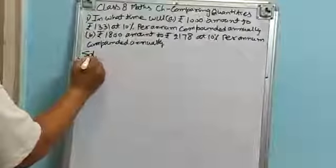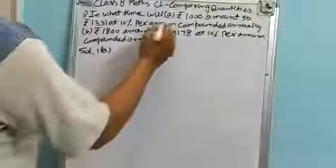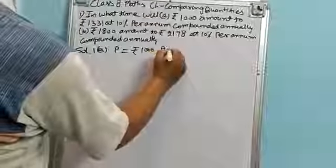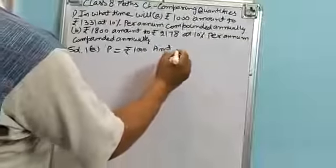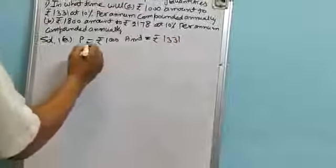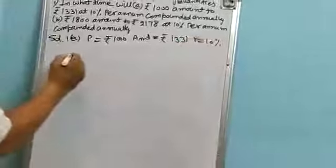Solution 1, Part A. Principal is Rs. 1000, amount is Rs. 1331, rate is 10%. We have to find out the time.